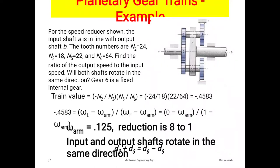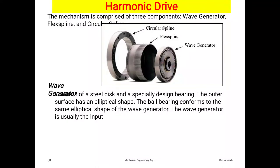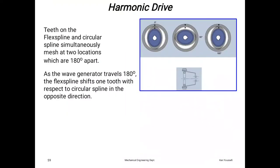Harmonic drive: the mechanism comprises three components—wave generator, flex spline, and circular spline. Wave generator is a steel disc with specially designed bearing. The outer surface has elliptical shape. The ball bearing conforms to the same elliptical shape of wave generator. Wave generator is usually the input section. Flex spline is a thin-walled steel cup with gear teeth on outer surface near the open end. Flex spline is usually output section. Rigid internal circular gear: circular spline meshes with external teeth on flex spline. Harmonic drive: teeth on flex spline and circular spline simultaneously mesh at two locations 180 degrees apart. As wave generator travels 180 degrees, the flex spline shifts one tooth with respect to circular spline in opposite direction. Thank you, friends. Next part of this topic we will see in next session.